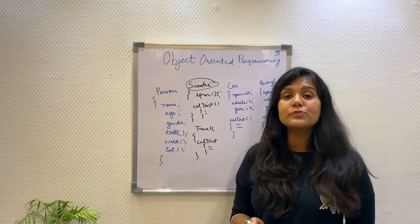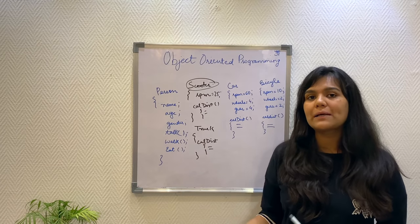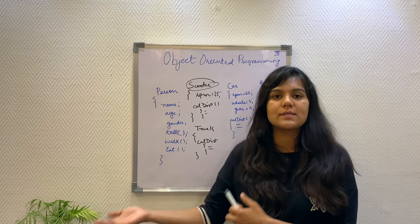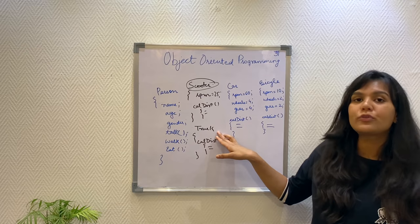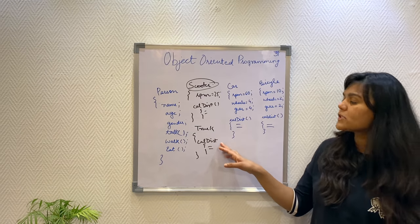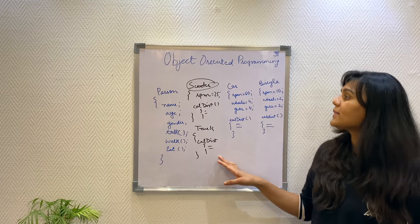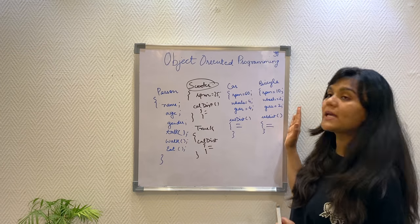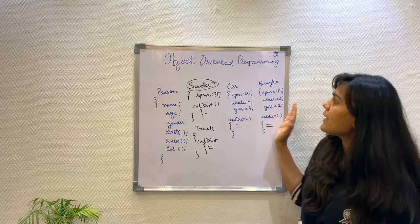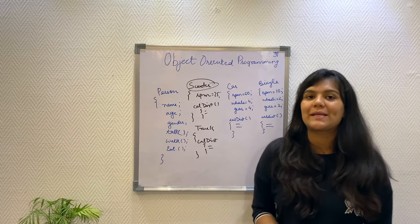Similarly, when the problem changes and for a new vehicle, we have to have a new calculate distance formula, we just have to create a new truck class and it will have its own calculate distance formula of speed into time. Thus, we realize that without changing our existing code, we are able to extend the code. And this is what OOPS provides.